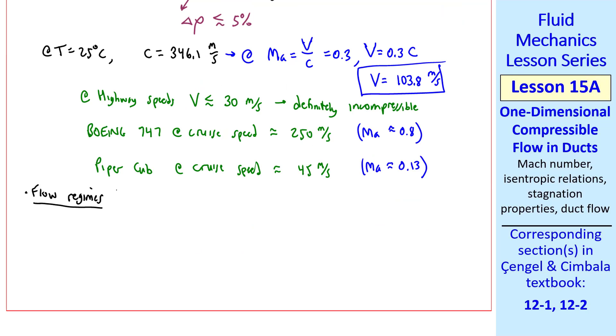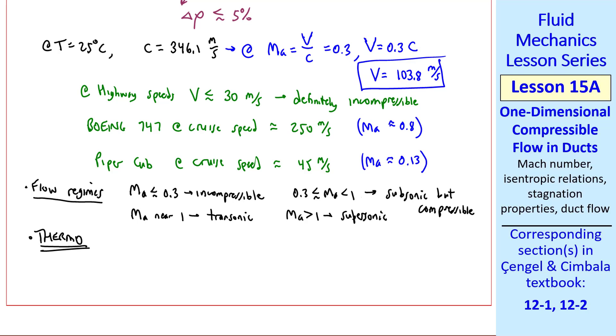Let's look at some flow regimes. At a Mach number below about 0.3, we can consider the flow incompressible. If the Mach number is between about 0.3 but under 1, the flow is subsonic but compressible. Mach numbers near 1 are called transonic, and Mach numbers greater than 1 are supersonic.